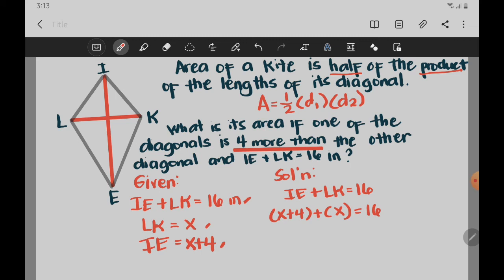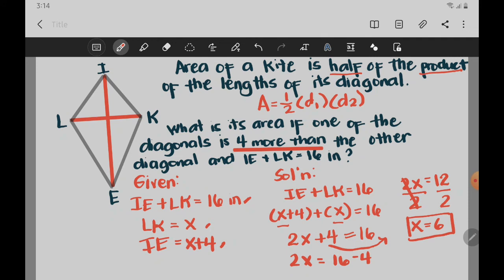And then combining like terms. So we have X plus X, that would be 2X. And then write down 4 equals 16. And then transpose positive 4 to the right side of the equation, it will become negative. So we have 2X equals 16 minus 4. That would be 2X equals 12. Divide both sides by 2. X is equal to 12 divided by 2, that would be 6. So our value of X is 6.